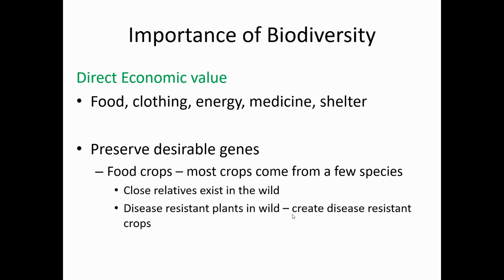We get different things from biodiversity — there's a direct value. You can see that some of our stuff comes from very different things. One thing I like to relate to is building: different woods are good for different things. If you just use the same wood for everything, that doesn't work. There are also desirable genes to preserve — crops and plants in the wild naturally develop resistance, and we can crossbreed with their domesticated relatives to get disease-resistant plants without having to do too much. So there's this direct value we get from it.